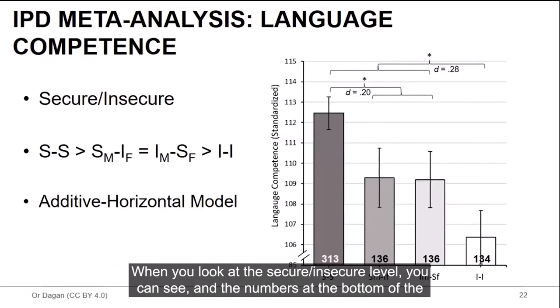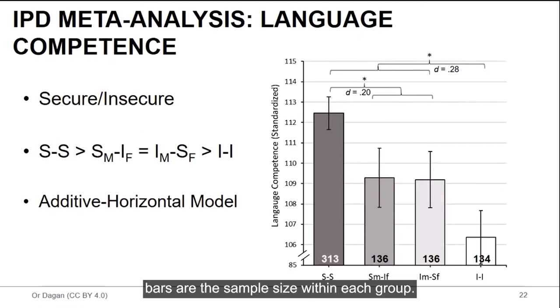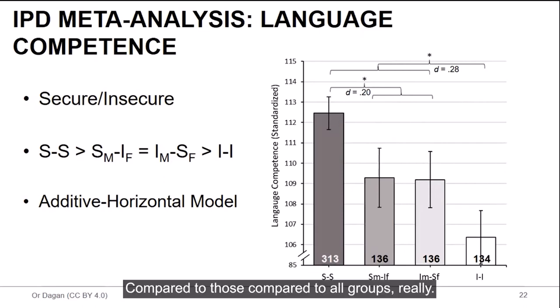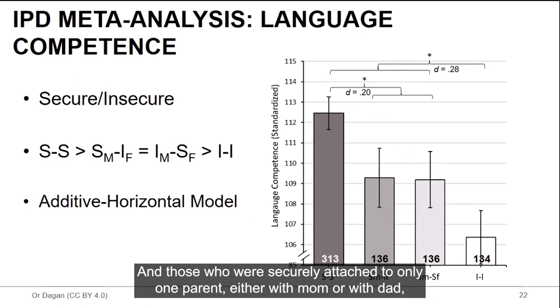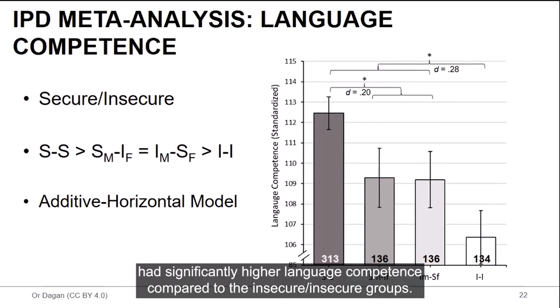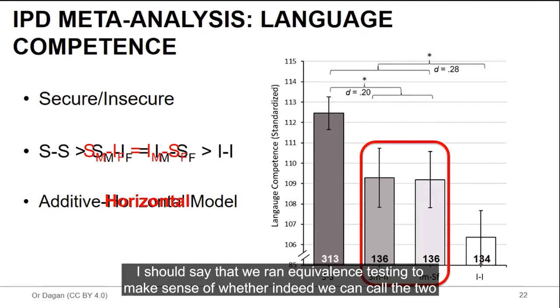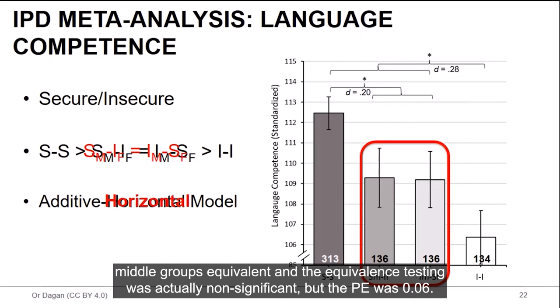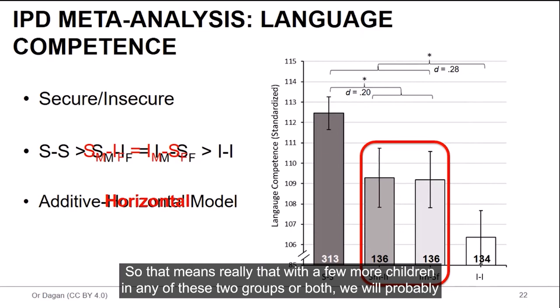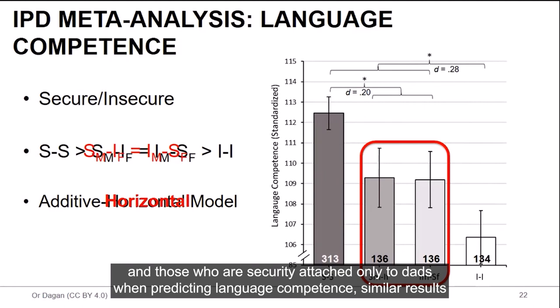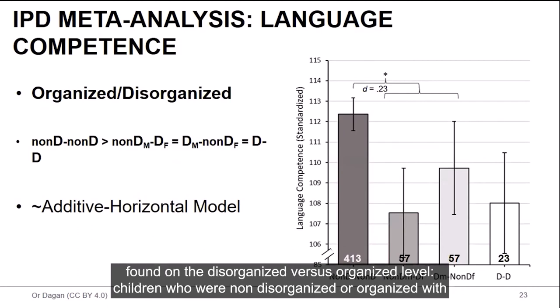And these are the results. When you look at the secure-insecure level, you can see, and the numbers at the bottom of the bars are the sample size within each group. So those who are securely attached to both parents had significantly higher language competence scores compared to all groups, really. And those who were securely attached to only one parent, either with mom or with dad, had significantly higher language competence compared to the insecure-insecure groups. Okay, so in that regard, the additive horizontal model was corroborated. I should say that we ran equivalence testing to make sense of whether indeed we can call the two middle groups equivalent. And the equivalence testing was actually non-significant, but the p-value was 0.06. So that means really that with a few more children in any of these two groups or both, we will probably be able to conclusively say there is no difference between those who are securely attached only to moms and those who are securely attached only to dads when predicting language competence.